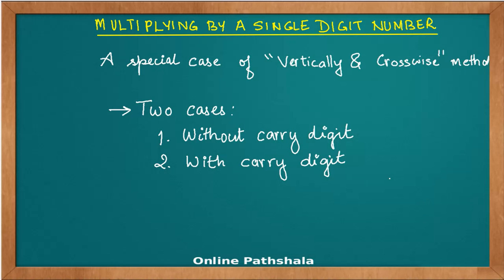In this video I'm going to cover the special case of multiplying a number by a single digit number. When I say number, it could be any arbitrary number with n digits. A good way to look at it is that it's a special case of the vertically and crosswise method, and it's simpler. We'll understand this by taking two cases.